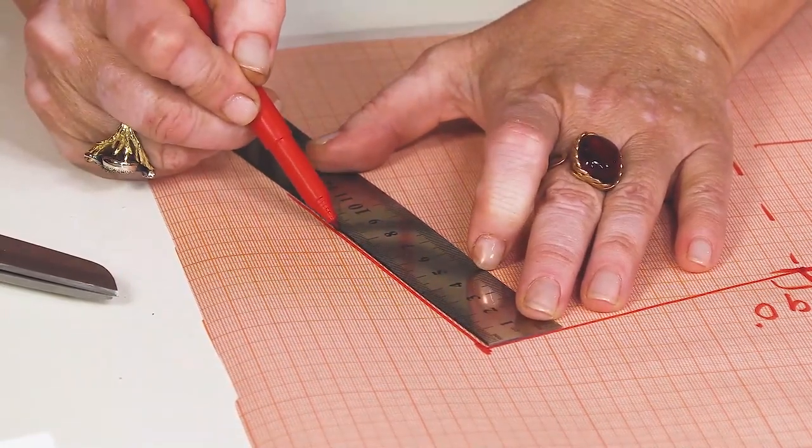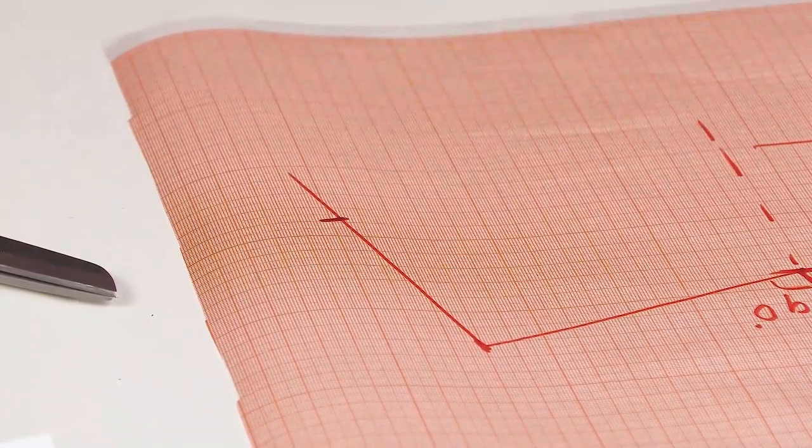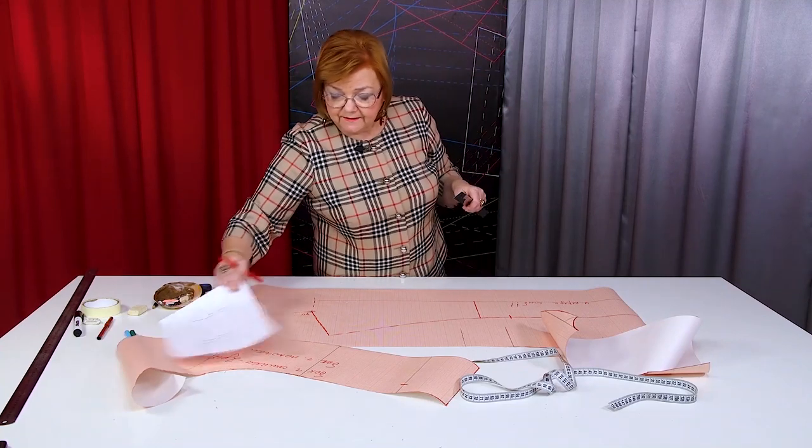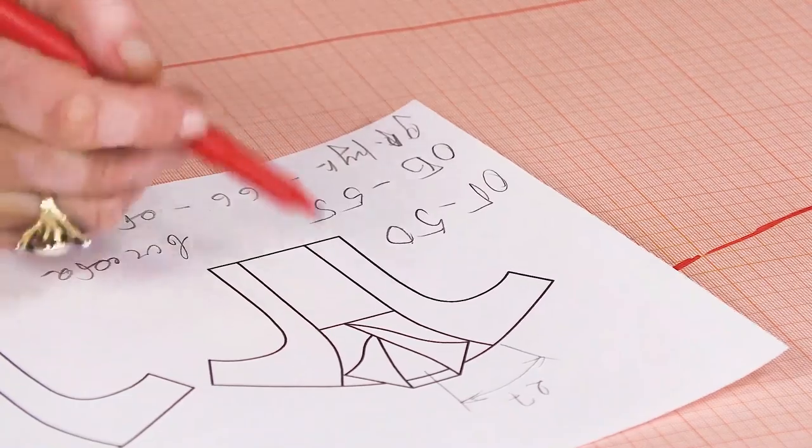I show you the most simple techniques. The width of the collar on the back will be 9 cm. To make a wrap here, we need to extend the center front by 3 cm.